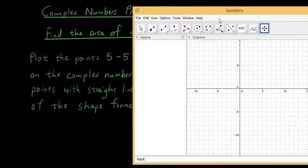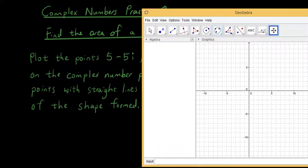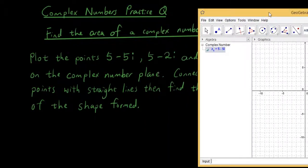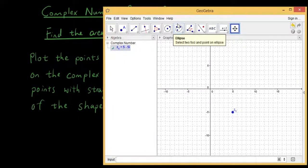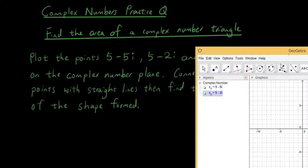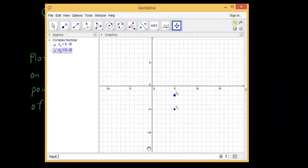Okay, so we're going to enter the three numbers. We have 5-5i, we have 5-2i, and the third one is -5+2i. So put those numbers in.